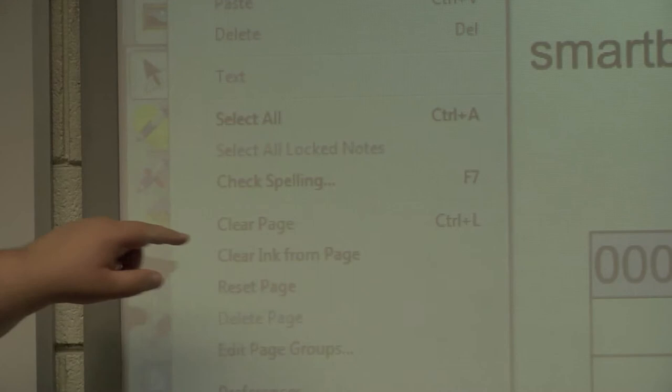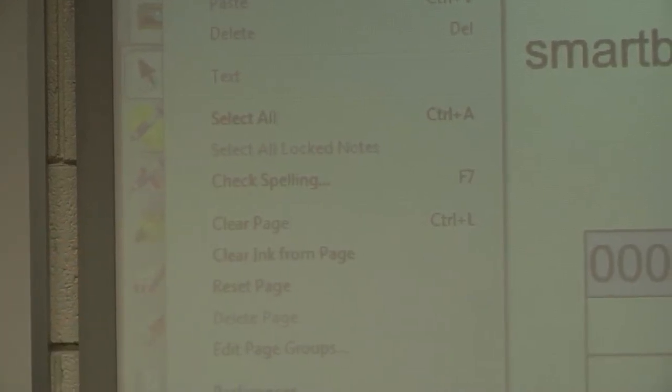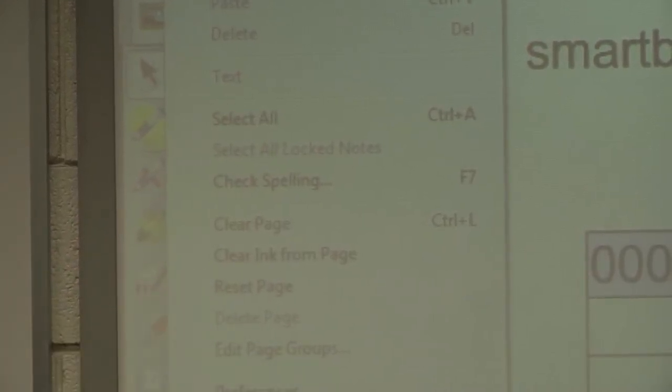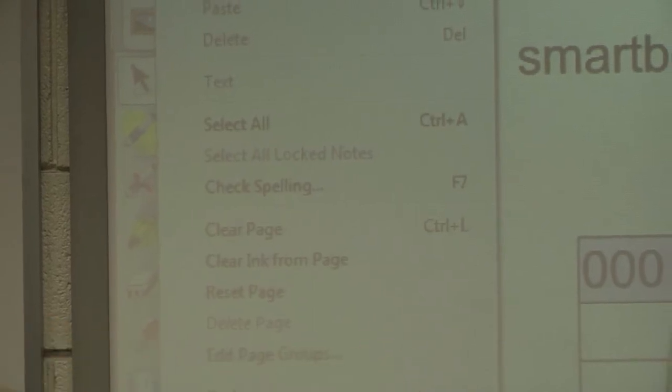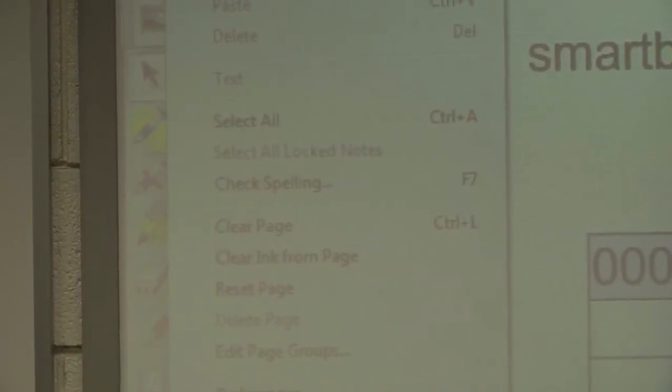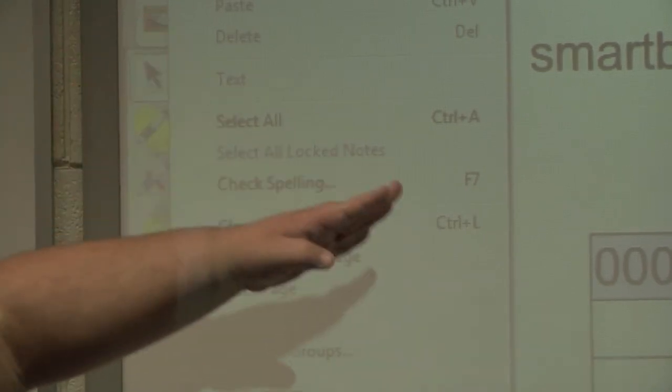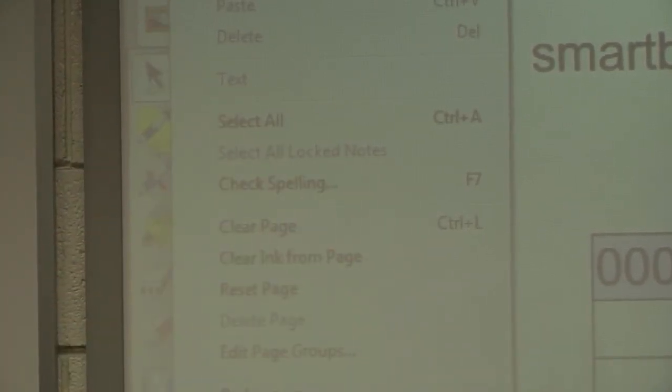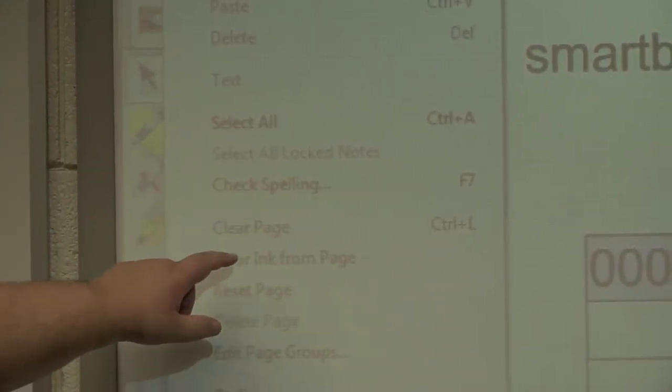Near the bottom of it are two different options. There's clear ink from page and clear page. The difference between this would be clear ink from page will be only anything that you've drawn with your finger such as those green marks I put or anything you've drawn to the pen. And clear page will clear everything off of that page. So I'll show you both options right now. First one is clear ink from page.